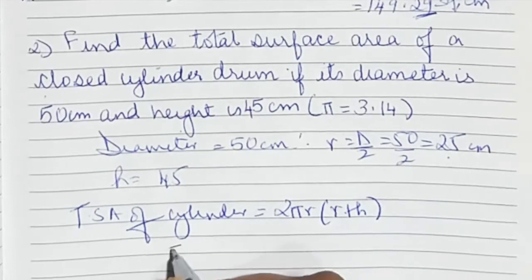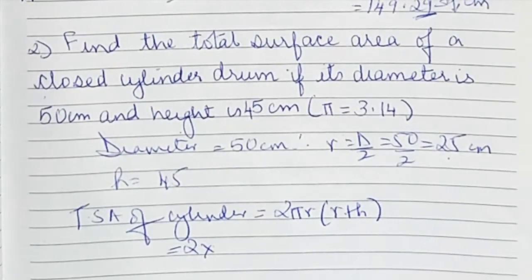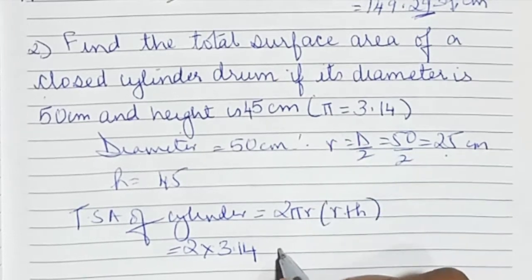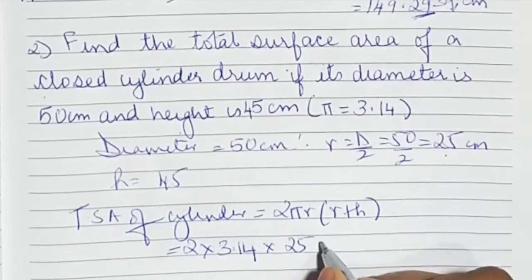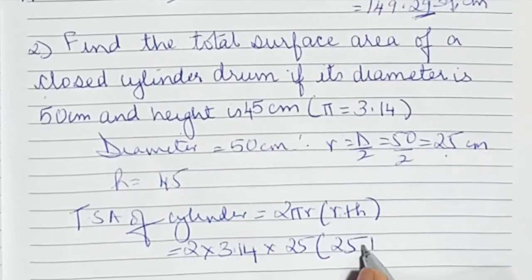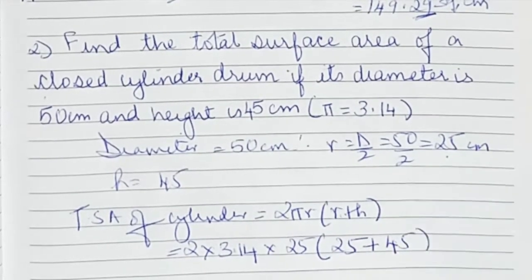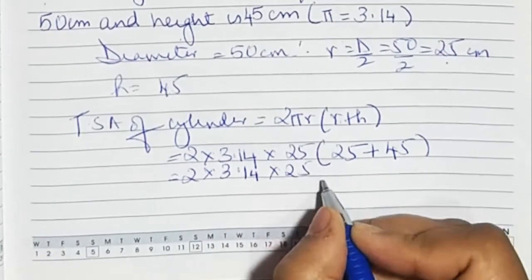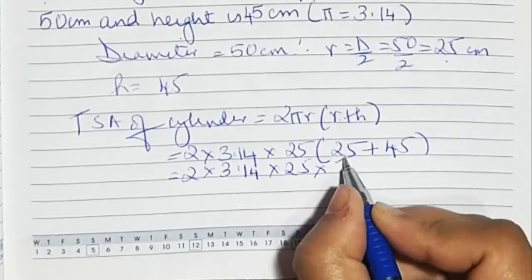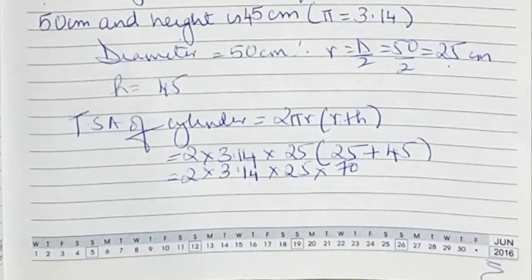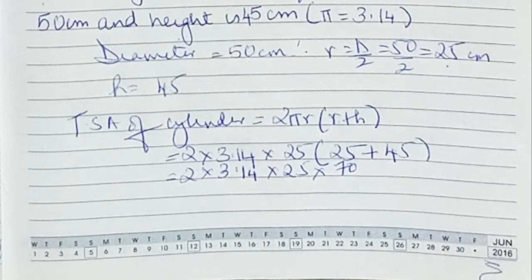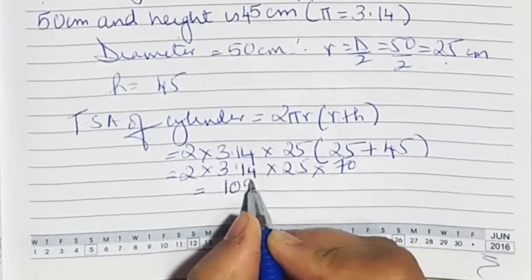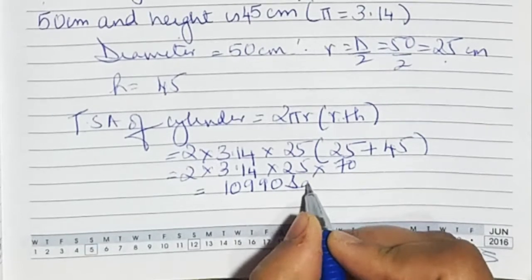For pi we put 3.14 — we cannot put 22 upon 7 because the value given here is 3.14. So it is 2 into 3.14 into 25 into (25 + 45). That gives 2 into 3.14 into 25 into 70. When you multiply 2 into 3.14 into 25 into 70, the final answer you get is 10990 square centimetres.